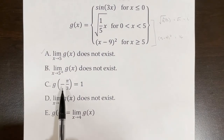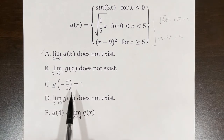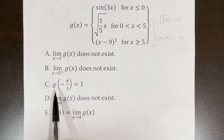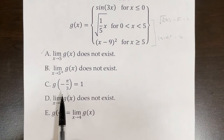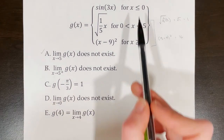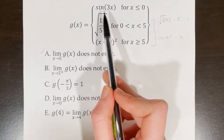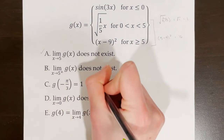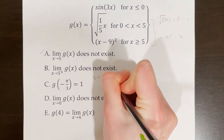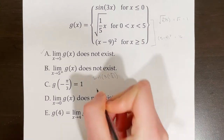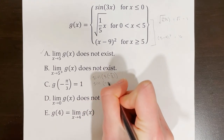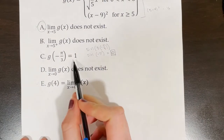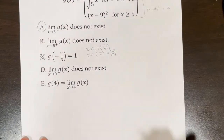Statement C states that g of negative π over 3 equals 1. Note this is not a limit question — we're just plugging in. Since negative π/3 is less than or equal to 0, we use the top function: sine of 3 times (−π/3) equals sine of negative π, which equals 0. Since 0 is not equal to 1, statement C is false.